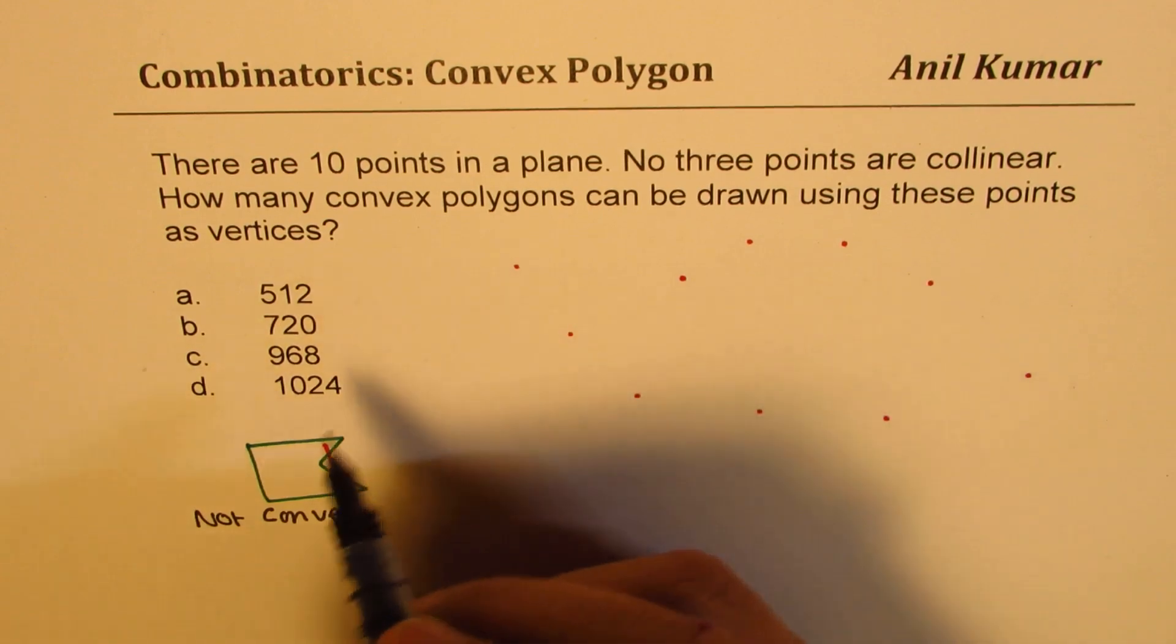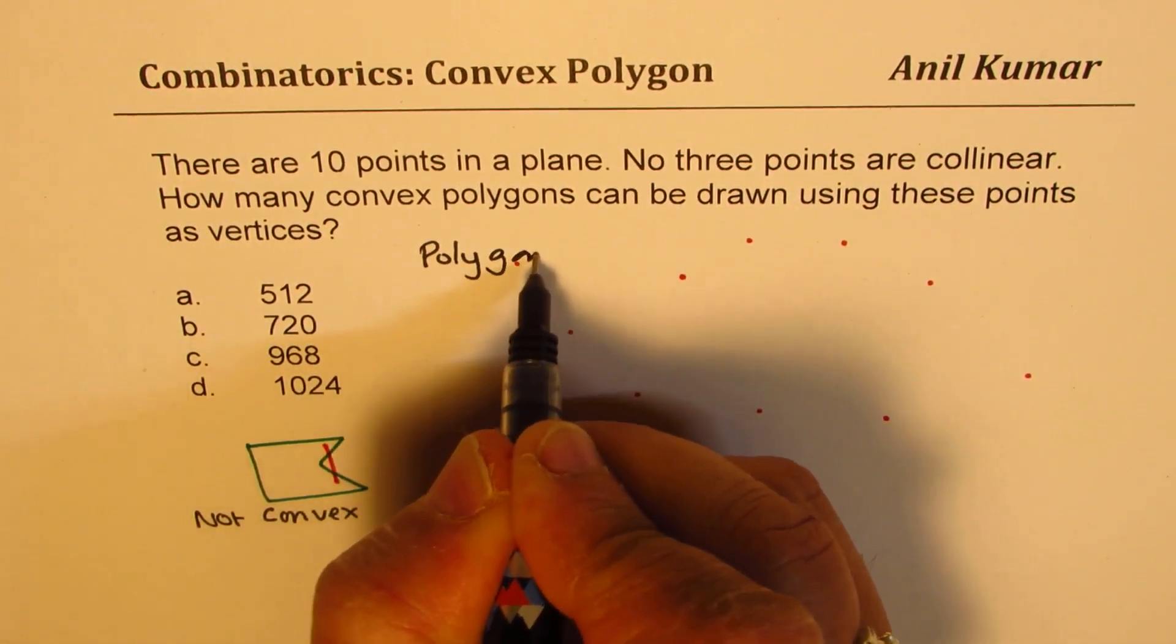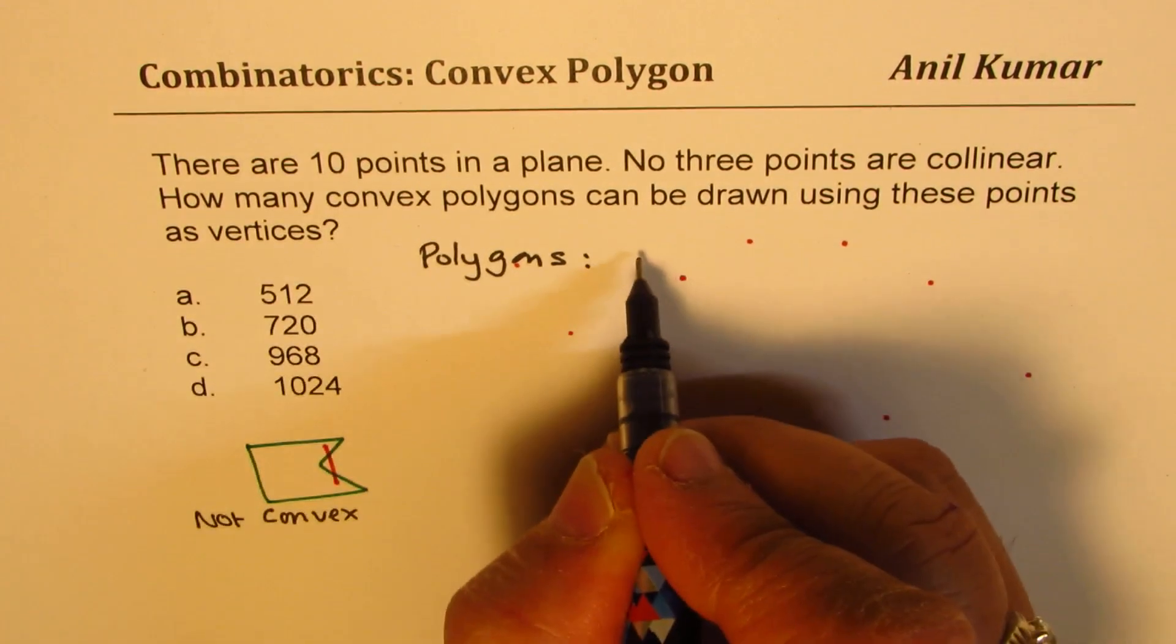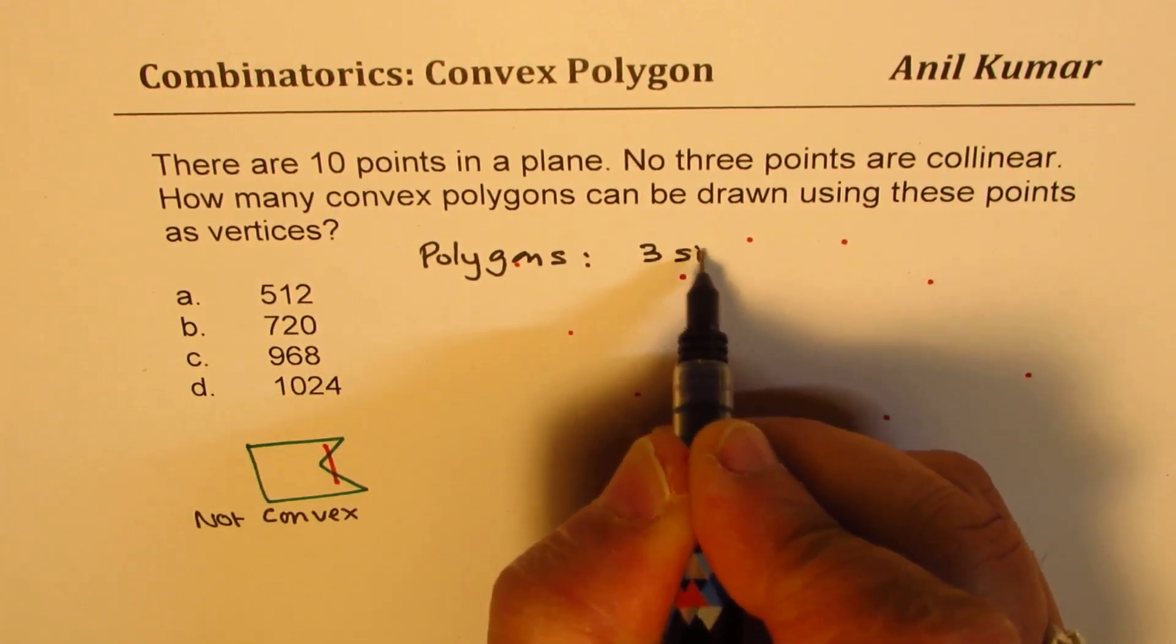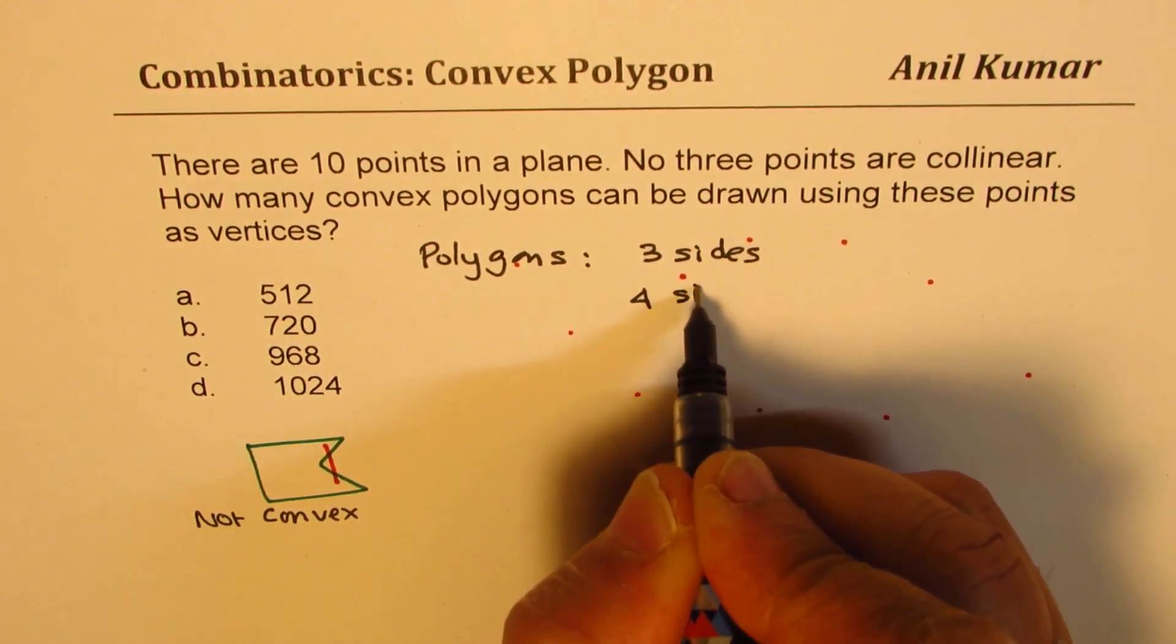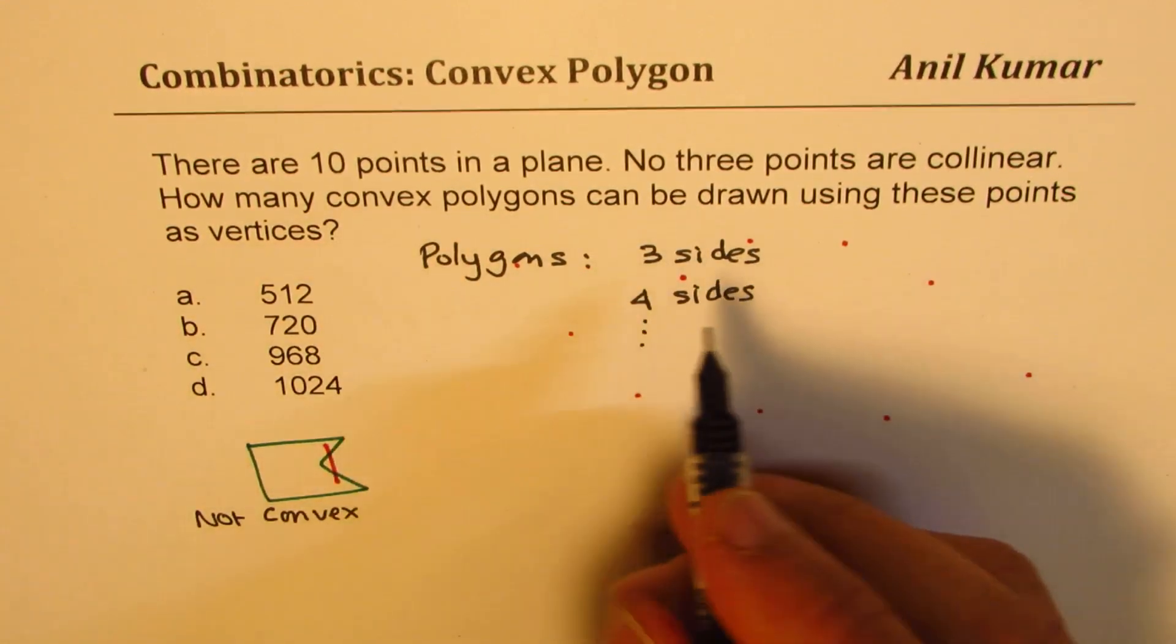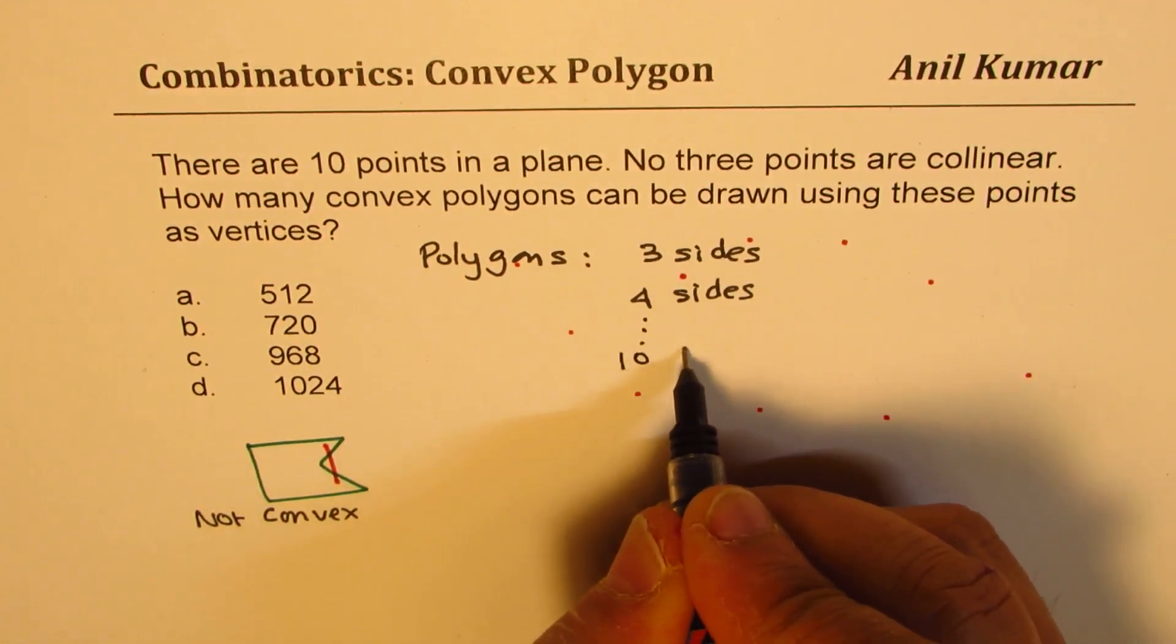So we could have a polygon. When we say polygon, what do we mean? Polygons will have minimum three sides, right? So minimum we have three sides. And then we could also have one with four sides, right? And so on till, because there are 10 points, we could have one with 10 sides.